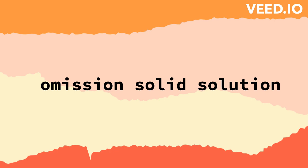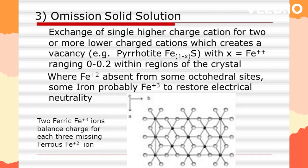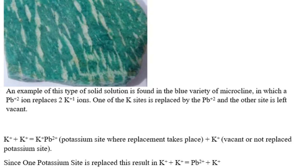Omission Solid Solution occurs when an ion of higher charge substitutes for an ion of lower charge. To maintain charge balance, two of the lower charged ions will be replaced, but the higher charged ion will occupy only one site — thus the other site will become vacant or omitted. An example of this type of solid solution is found in amazonite, which is a blue-to-green microcline feldspar. In amazonite, we see a perthitic texture, visible to our naked eyes as thin white parallel laths of albite in the green amazonite host.